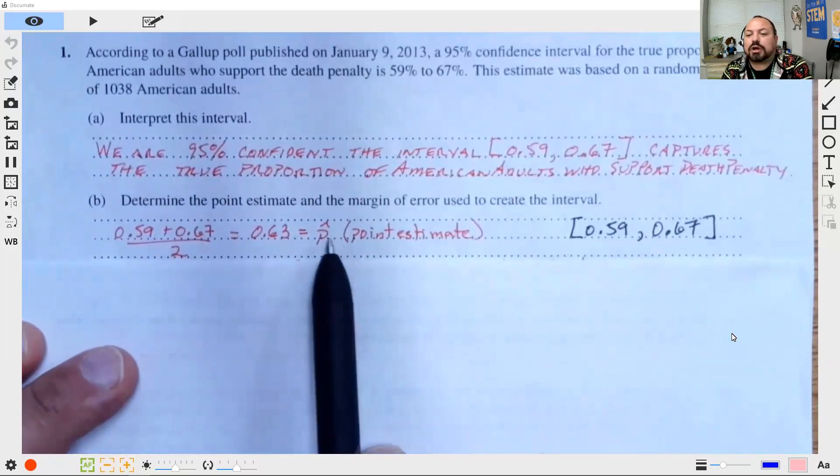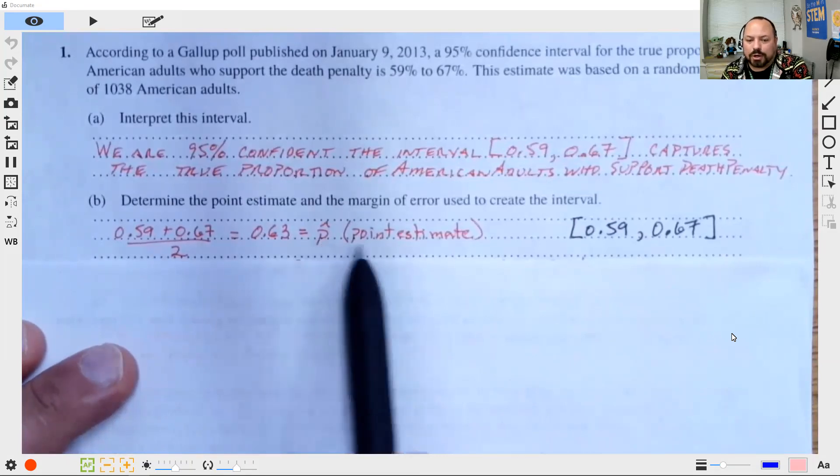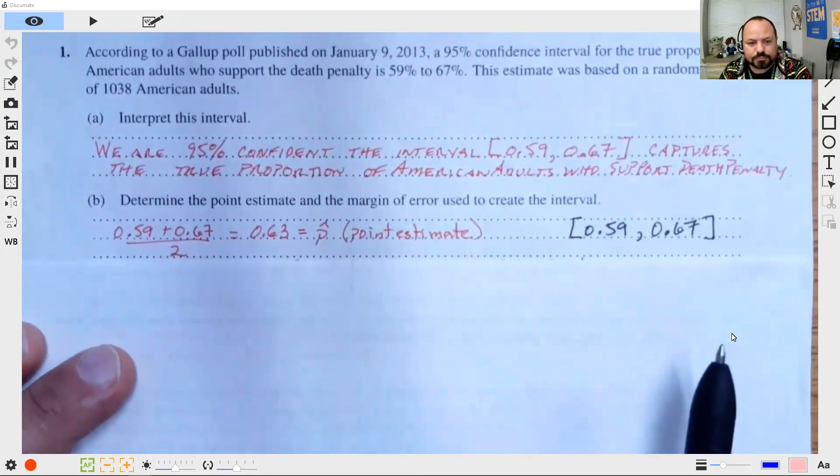And because this is an interval for a proportion, that value would have been my p hat, my statistic for my particular sample. And we call that the point estimate.